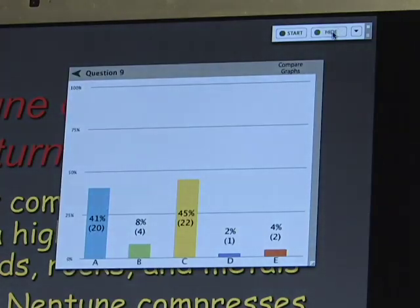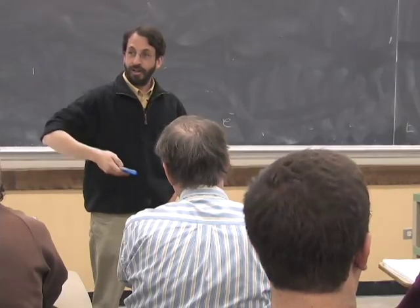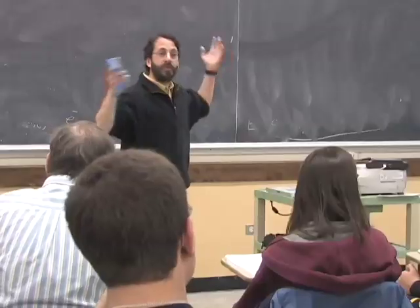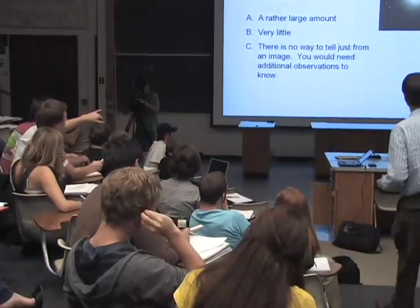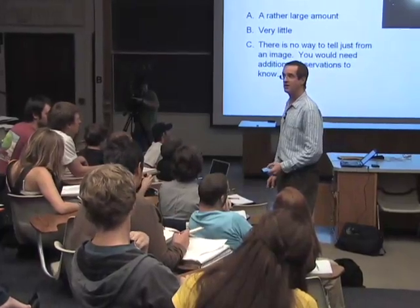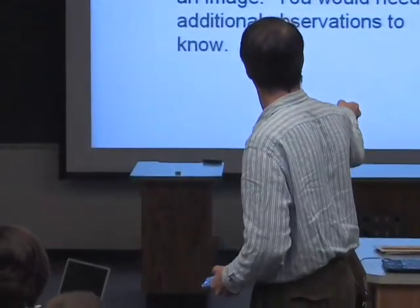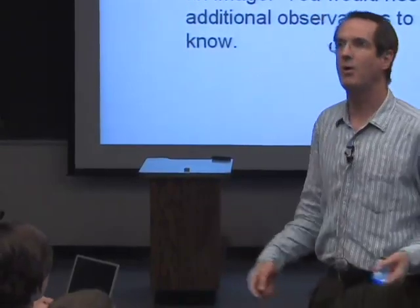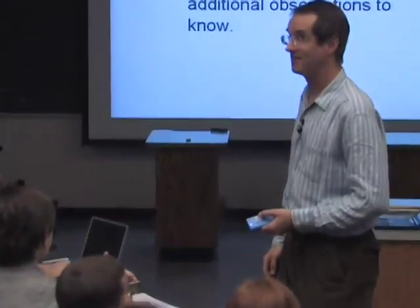Sometimes the class will be really divided on the question. Showing the histogram here can be really powerful, as long as you don't take the first right answer and move on. If it's 50-50, it's brilliant — you show the histogram because that gets everybody excited. Now there's a debate in the room and we have to resolve it. I try very hard not to be the resolver. I'll typically call on someone who gave a wrong answer and let them speak first, then call on someone who gave a correct answer and let them articulate their reasoning, then turn to the class and say, 'What do you think about these two arguments?' Then I'll wrap the whole discussion up myself.